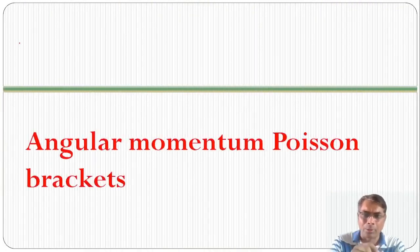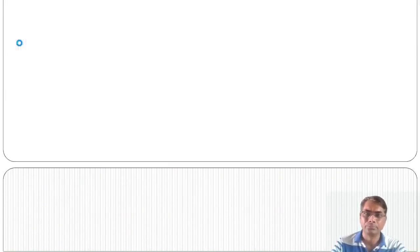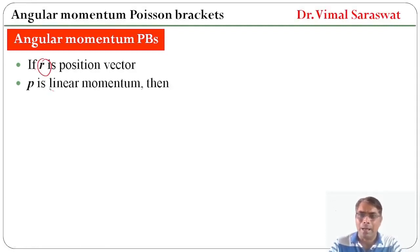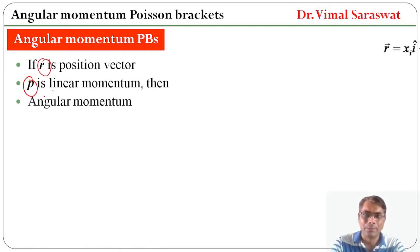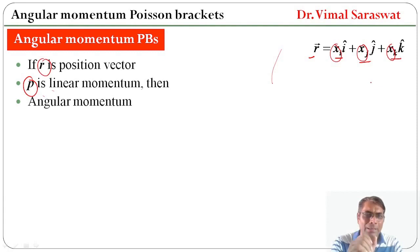Here we will discuss about angular momentum Poisson brackets, or the Poisson bracket involving angular momentum. If r is the position vector and p is linear momentum, then angular momentum is given by their cross product. The position vector r equals xi·i-cap plus xj·j-cap plus xk·k-cap, where xi, xj, and xk are the components of r along the x, y, and z directions, and the unit vectors along those directions are i-cap, j-cap, and k-cap.